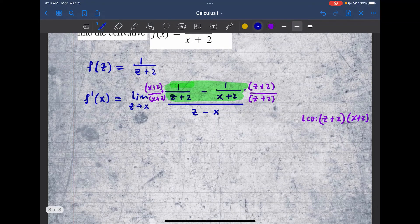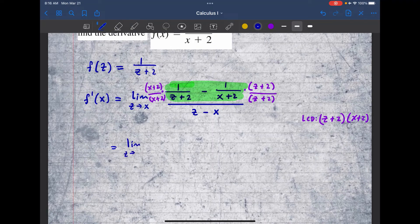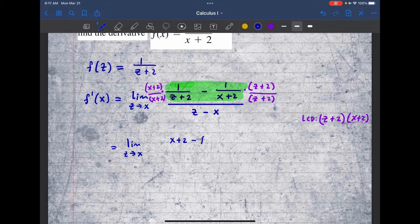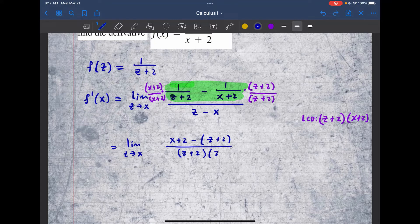So once we do that on top, we have the following limit as z approaches x. So on top, I get x plus 2 times 1. So that's simply x plus 2 minus. Now here you do want to put parentheses because the minus applies to everything that comes after. So minus z plus 2 all over the common denominator z plus 2 and then x plus 2 all over z minus x.